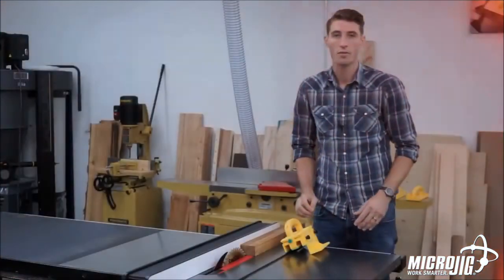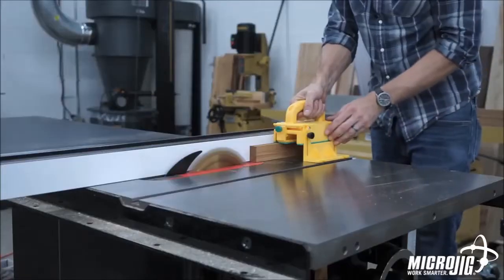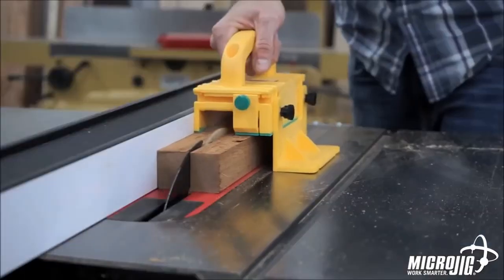The Gripper is incredibly easy to use. Simply put it on your workpiece, slide it up against the fence, and while maintaining contact, push it along the fence to make your cut. Its versatility, simplicity, and unique safety features make the Gripper the best push block in the world.